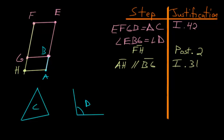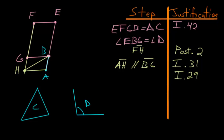Now let's connect B and H — because of Postulate 1, we can always connect two points with a line. Notice that FE and AH are parallel lines cut by the transversal FH. We know due to Book 1 Proposition 29 that if you have two parallel lines, their interior angles on the same side add up to two right angles.